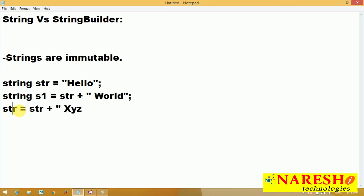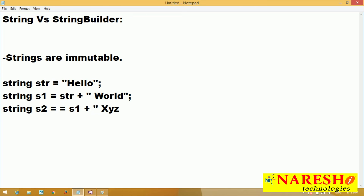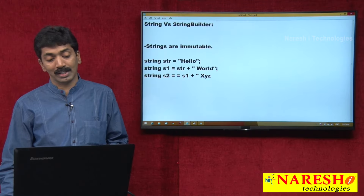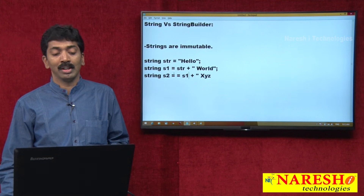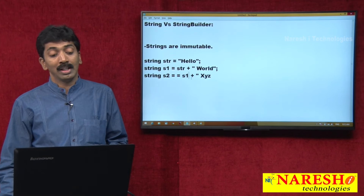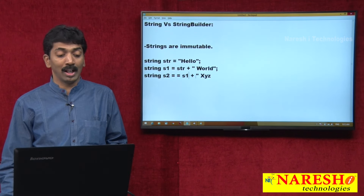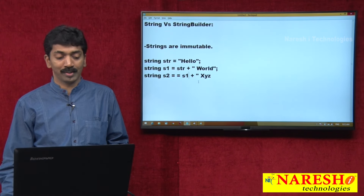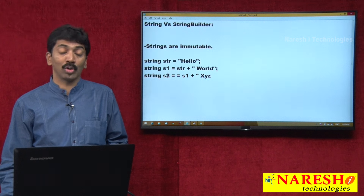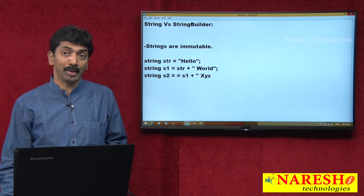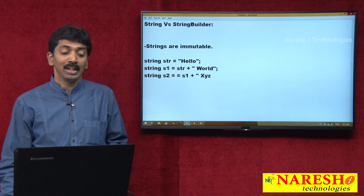The better way is: string s1 equals str plus "world"; string s2 equals s1 plus "xyz". So first str is "hello", s1 is "hello world", s2 is "hello world xyz". Internally three separate copies are going to be maintained — it never overwrites.